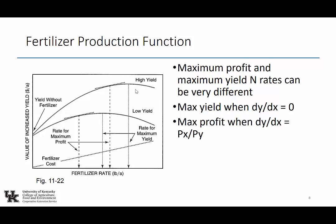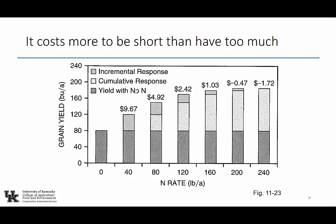Maximum profit and maximum yield nitrogen rates can be very different. We take that derivative and set it equal to zero for max yield. But for max profit, it's when the change in Y over the change in X is equal to the price of X (nitrogen) over the price of Y (yield). Is everyone following so far? The math hasn't gotten too crazy — it becomes more applied here in a second.